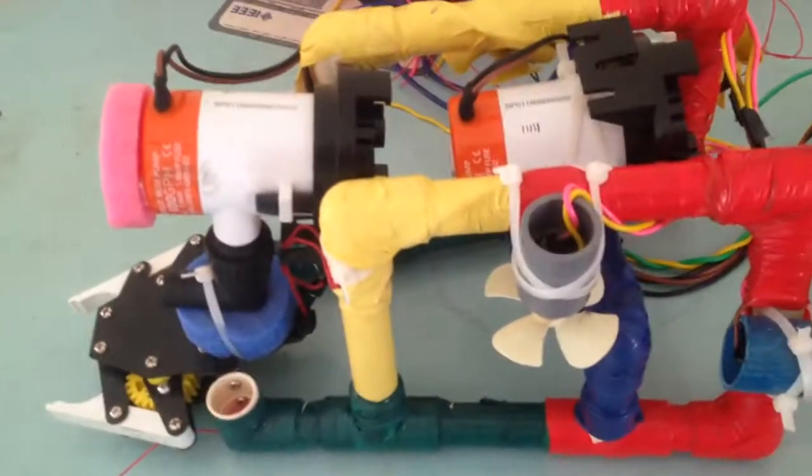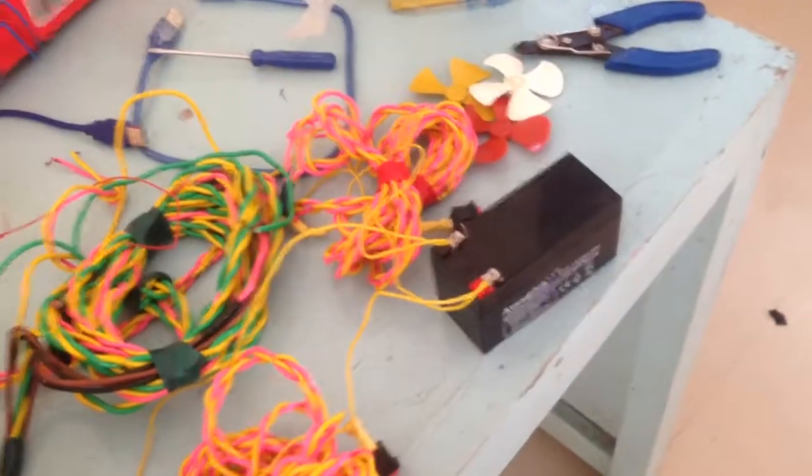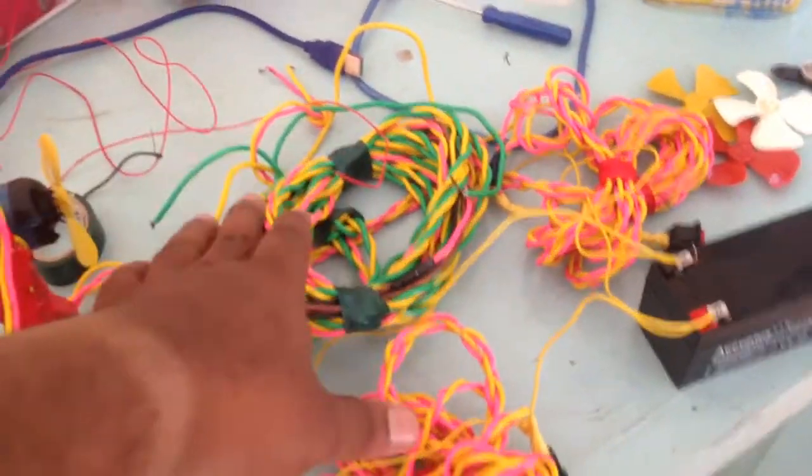This is the construction part of the underwater robot. This is the battery we used, a kind of junkwise things. This is the model of the underwater robot.